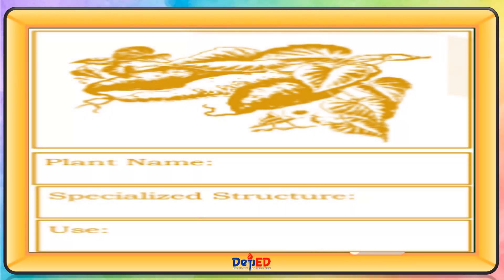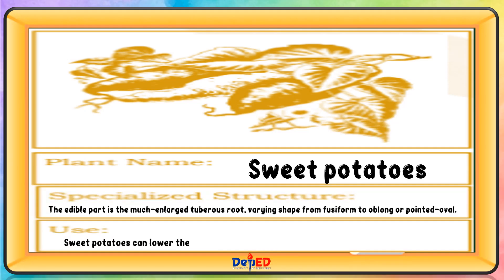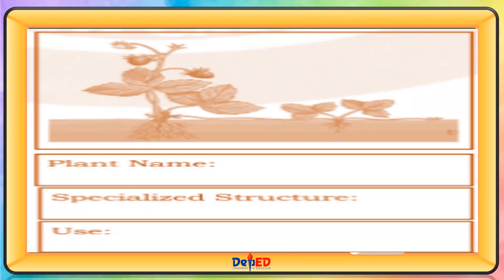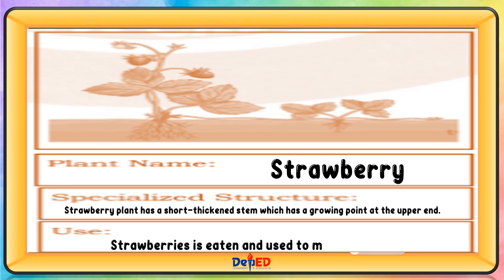Plant name: sweet potatoes. Specialized structure: the edible part is the much enlarged tuberous root, varying in shape from fusiform to oblong or pointed oval. Sweet potatoes can lower bad cholesterol, which may lower the odds of heart problems. Plant name: strawberry. Specialized structure: the strawberry plant has a short thickened stem which has a growing point at the upper end. Strawberries are eaten and used to make medicine.